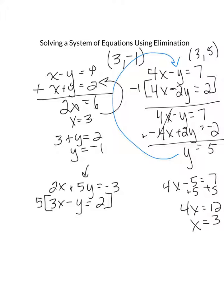When I multiply this by 5, my first equation is going to stay 2x plus 5y equals negative 3. My second equation is going to become 15x minus 5y equals 10. When I add the two together, you're going to see that those eliminate.